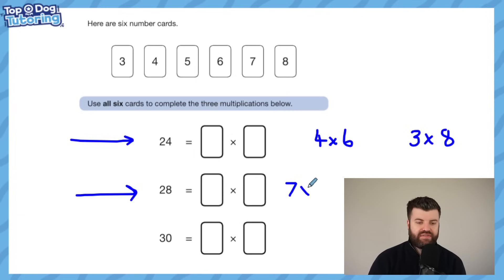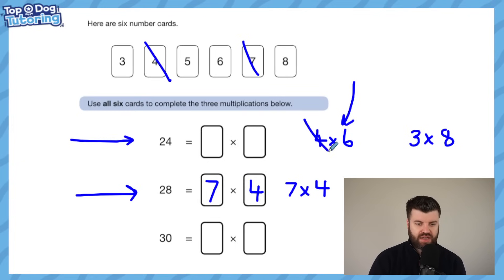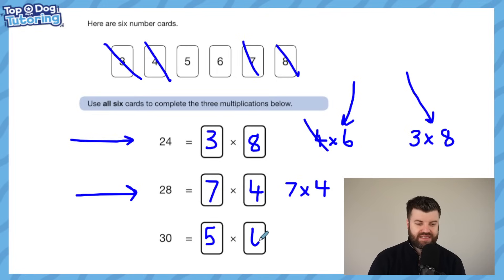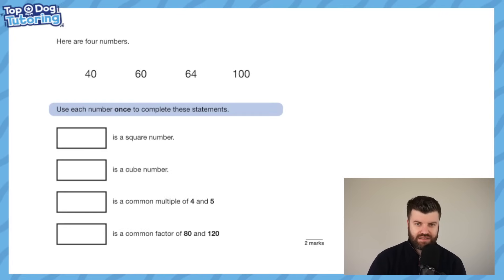How many ways can we make 28? Luckily there's only one way: 7 multiplied by 4. As soon as we know there's only one way to make a number, we can write it in. If we'd rushed and used 4 for the first multiplication, we'd see now we need that 4 for the second line. So the 4 is used - cross it out. Now for 24 there's only one option left: 3 times 8. And the remaining cards, 5 and 6, give us 5 times 6 equals 30. Taking our time and using strategy solves it perfectly.